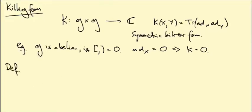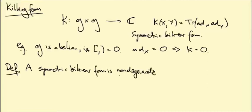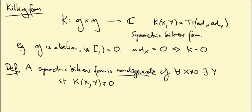Here's a definition. A symmetric bilinear form is called non-degenerate if for all x not equal to zero, there exists a y such that K(x,y) is not zero. So that's very far away from this abelian case where the killing form just vanishes. If it's non-degenerate for every vector, you can find something else such that K(x,y) is non-zero. So we say that little g is semi-simple if its killing form is non-degenerate.